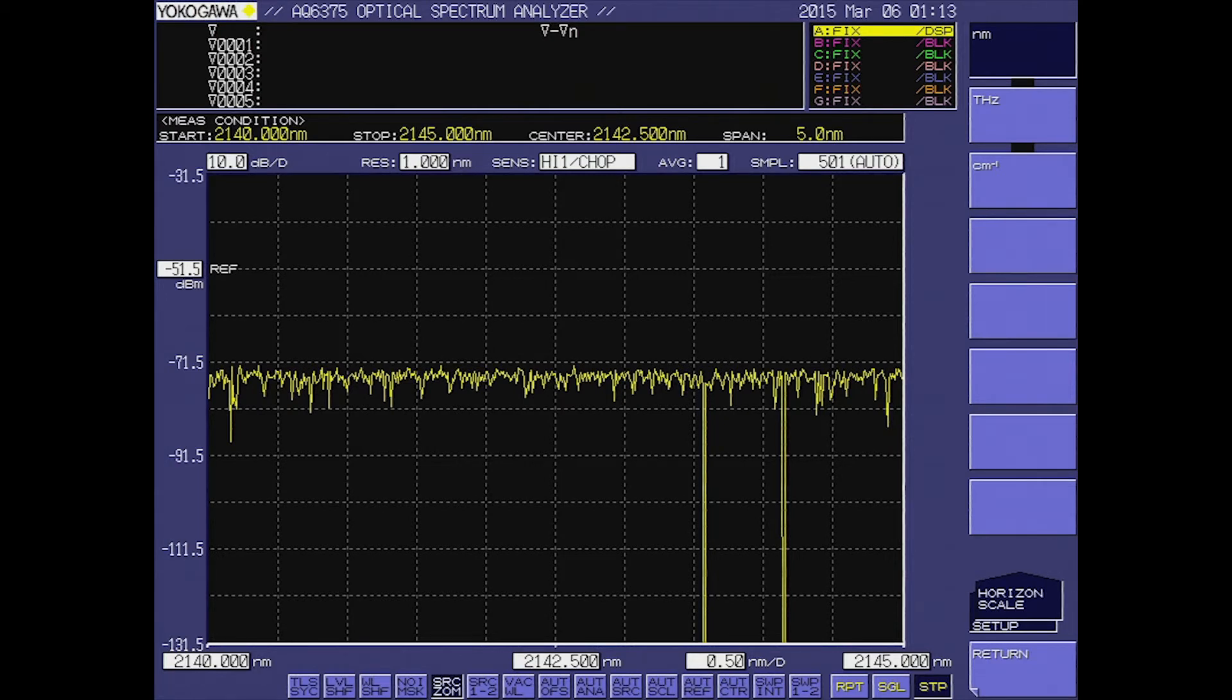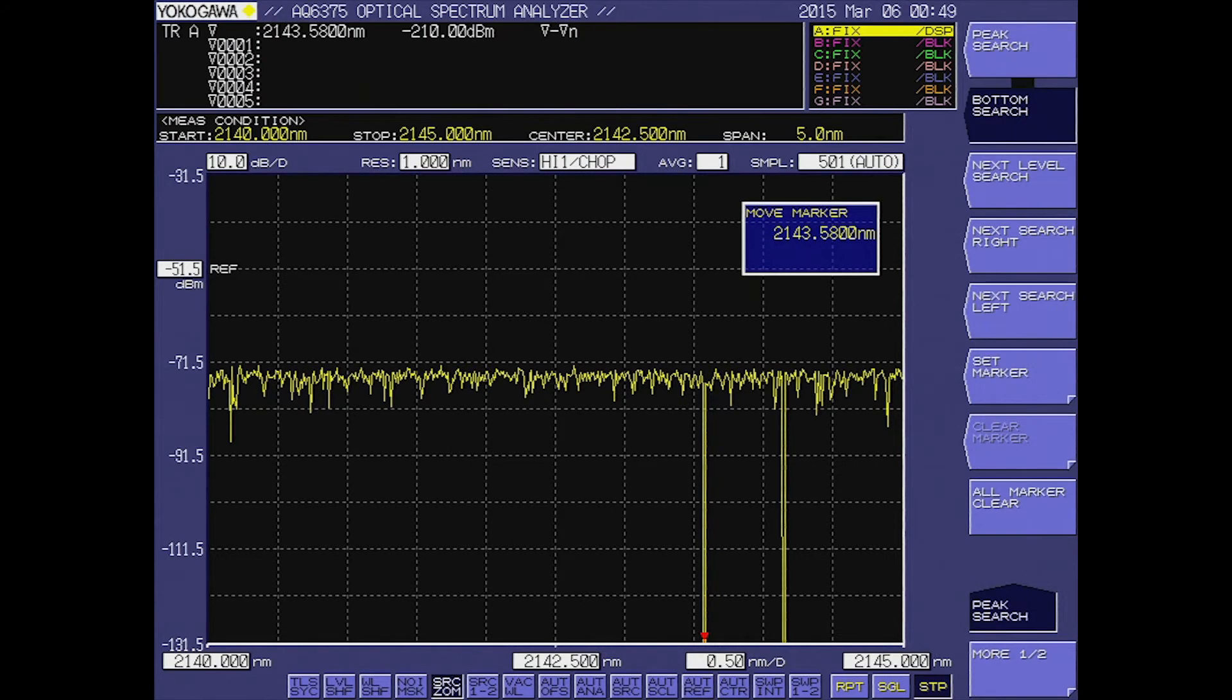You can display the results in nanometers, terahertz, or wavenumber. To get the exact reading of the absorption points, we can also use the peak search and bottom search functions. These absorption points can then be used to determine the type of gas that the light was sent through.